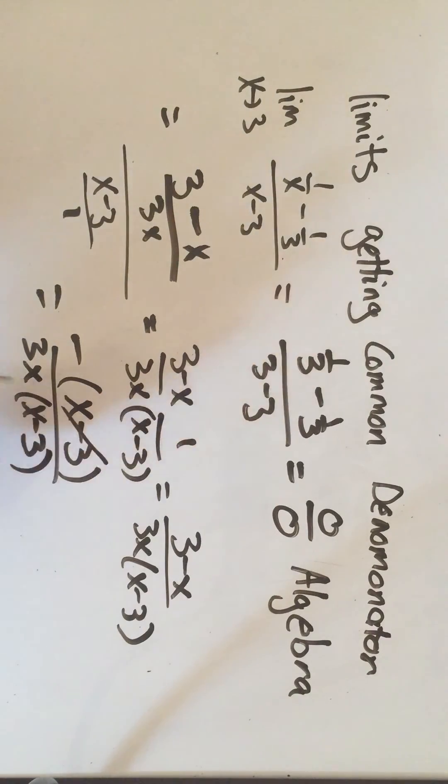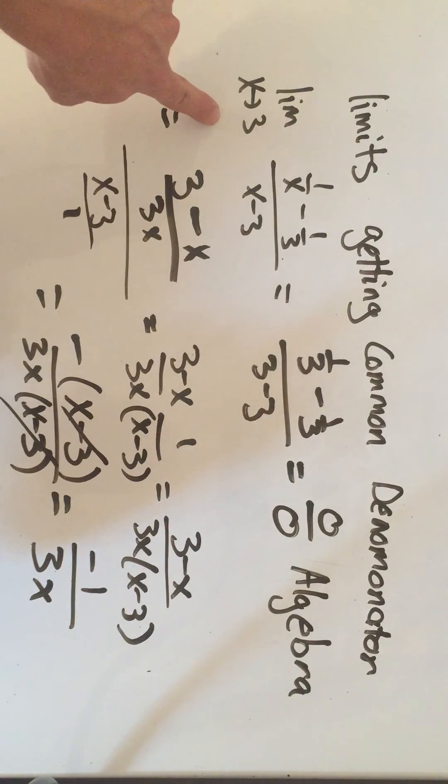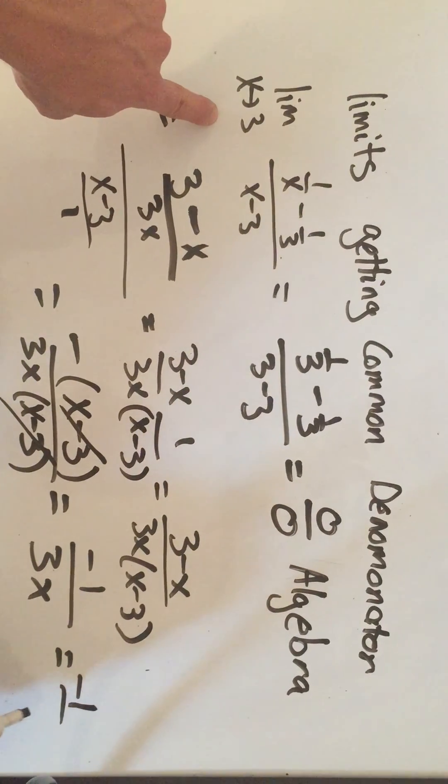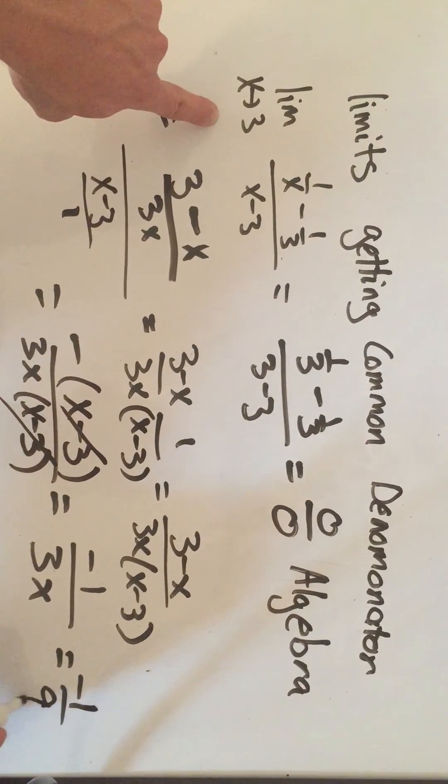And now I have x minus 3 over x minus 3. They cancel. I get a negative 1 on top, 3x on the bottom. I can now evaluate this limit at x going to 3. And I'll get 1 over 3 times 3 is 1 ninth.